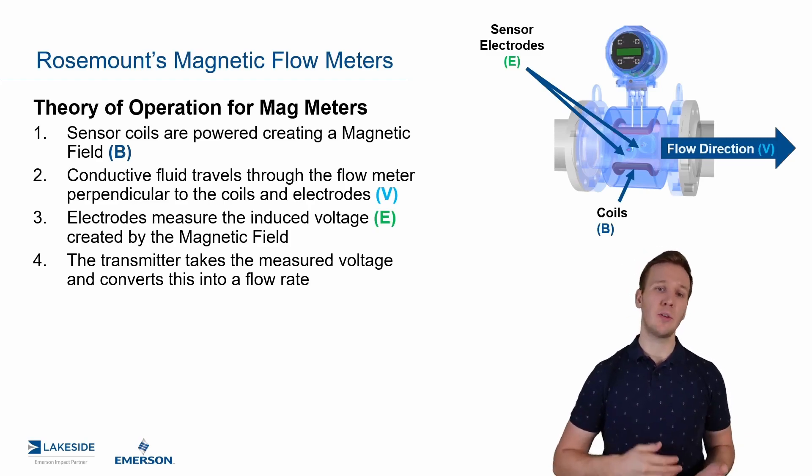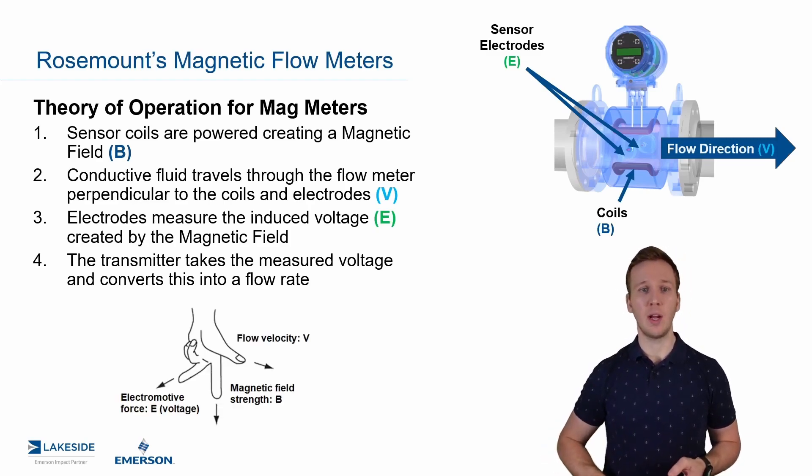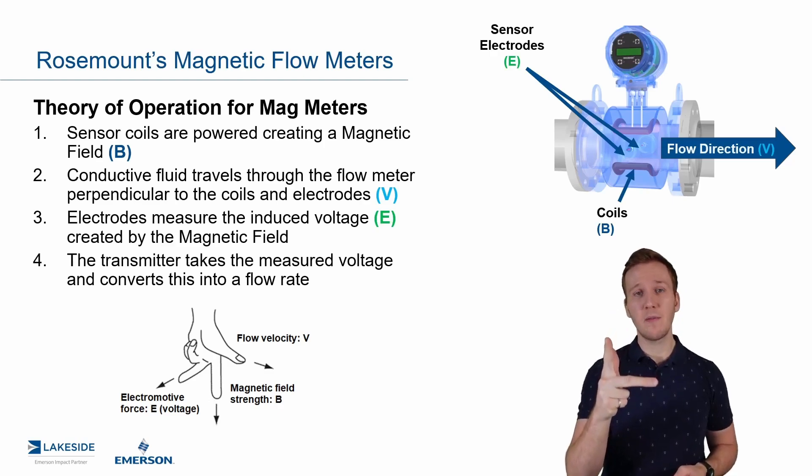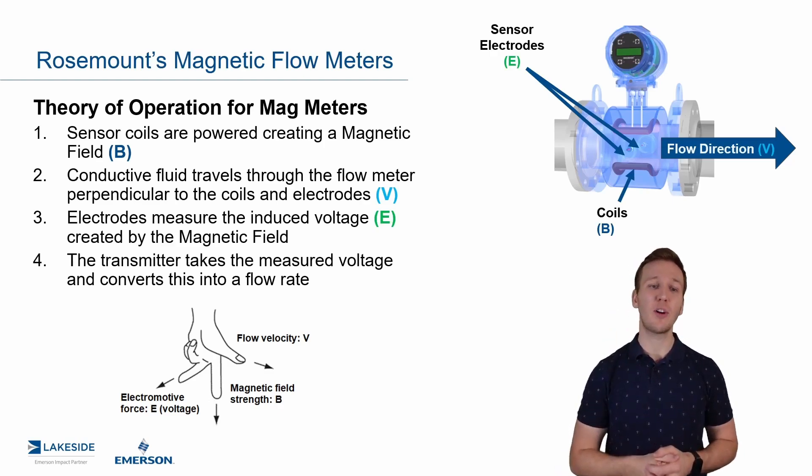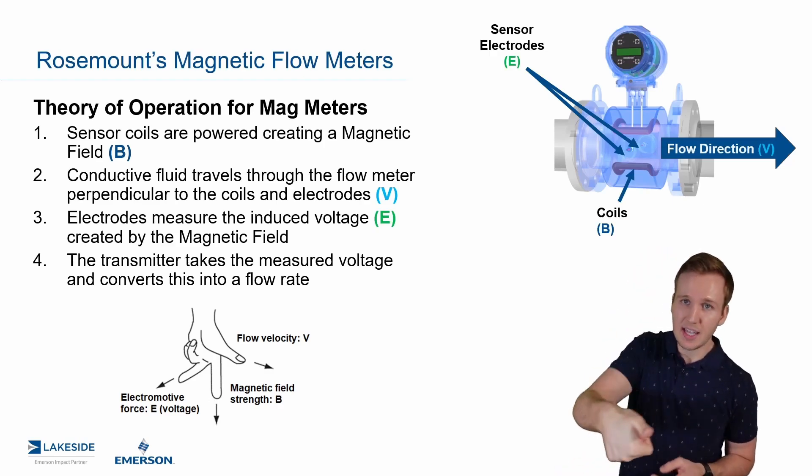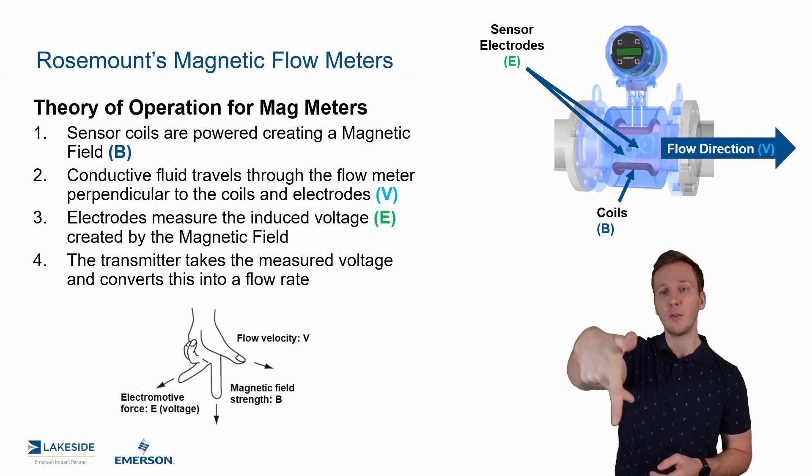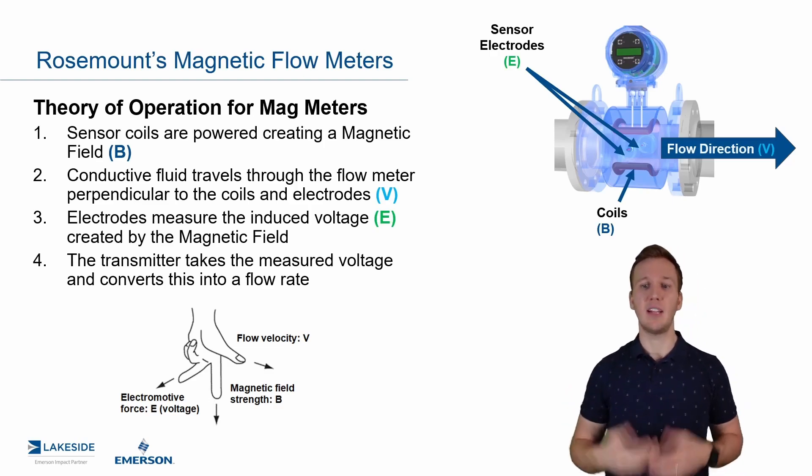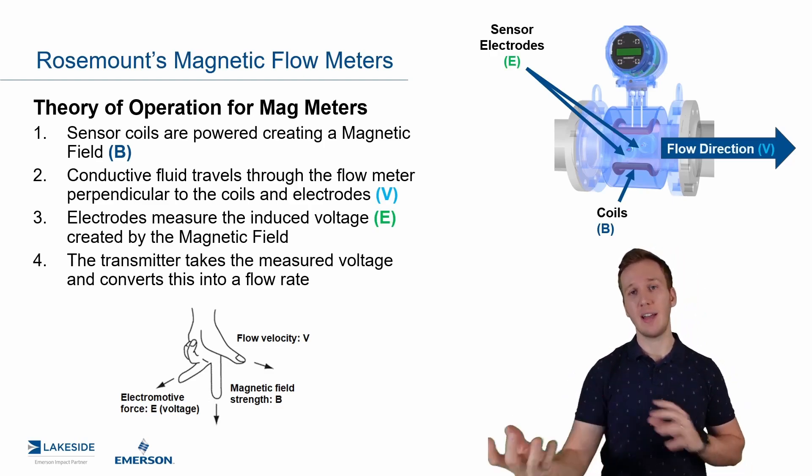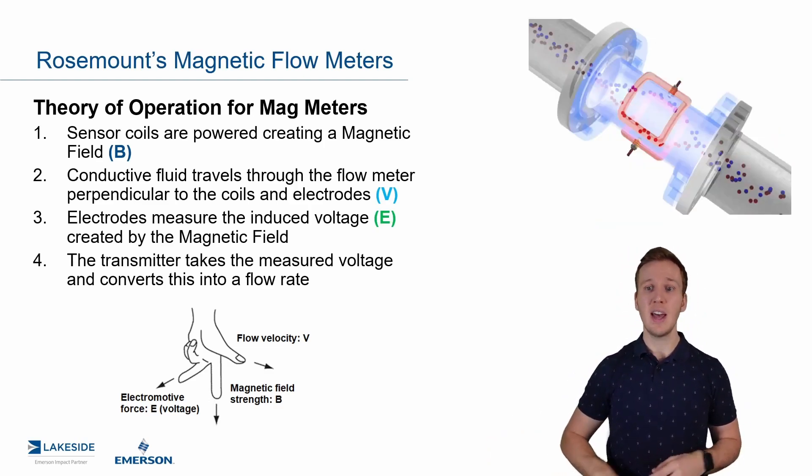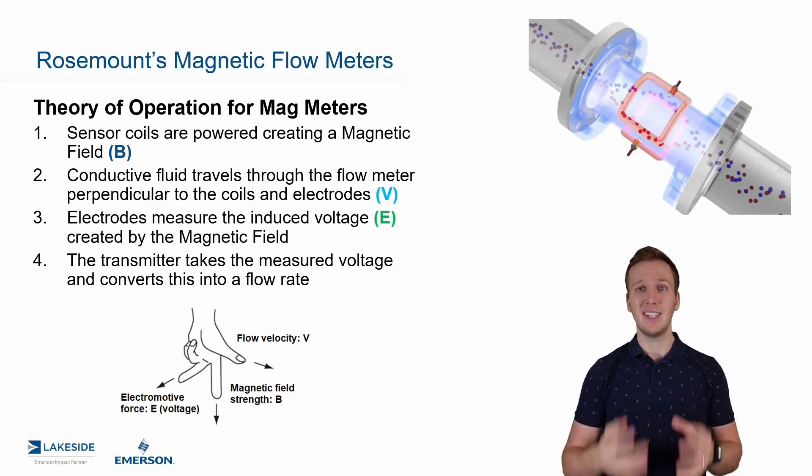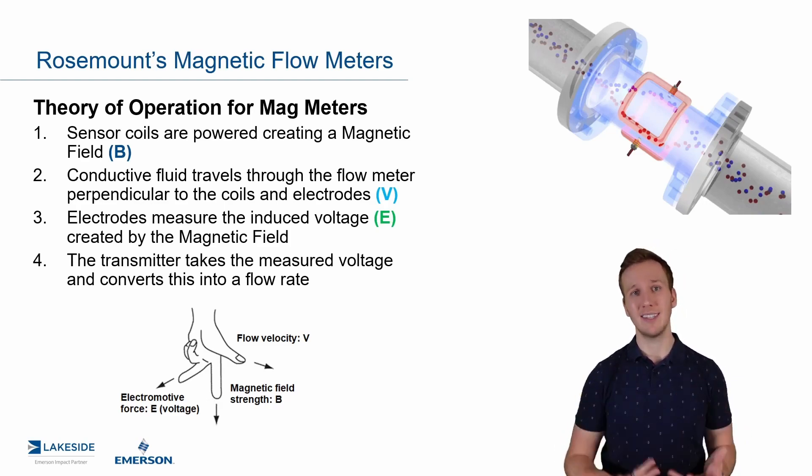And then lastly, we then take that induced voltage and translate that to a flow rate. If you remember the right-hand rule from physics class, this would be a good little refresher for you. The flow velocity is in that direction. We then have a magnetic field downwards, which means our induced voltage will be perpendicular to that. So that's why those sensor electrodes are on either side to measure that induced voltage. And what's really going on here is the electrons and protons are separating out because of this magnetic field. And that's what creates that induced voltage, which is measurable and translatable into a volumetric flow rate.